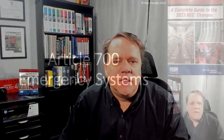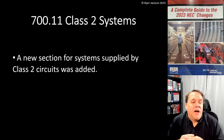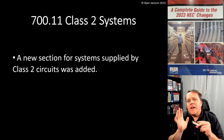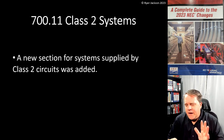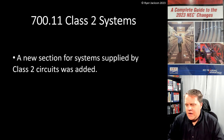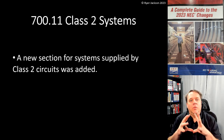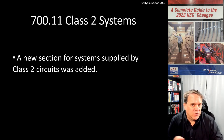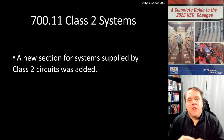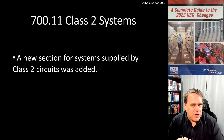Article 700, Section 700.11 — let's see what it says. Class 2 systems: a new section for systems supplied by a Class 2 circuit was added. A Class 2 circuit in this context is the power source. We have Class 2 circuits and Class 3 circuits in Article 725. A Class 2 circuit is considered safe from fire and electric shock. We limit the output of the power source — usually the transformer — to a low enough voltage that it's safe from electric shock and low enough current that it's safe from a fire initiation perspective.